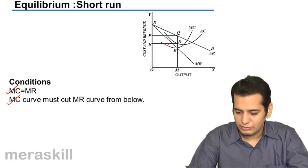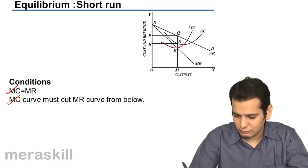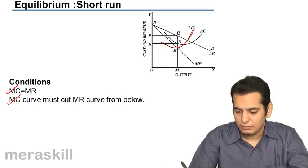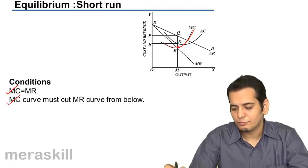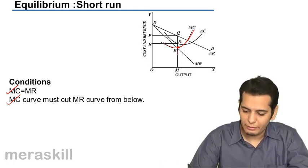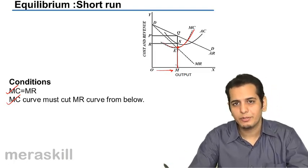Now, this is the MC curve. You can see that MC curve is cutting the MR curve at this point which is named as E. So, this becomes our equilibrium point wherein OM is the equilibrium quantity.